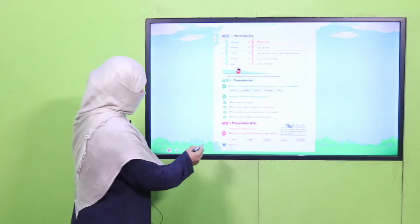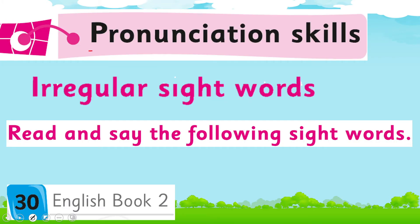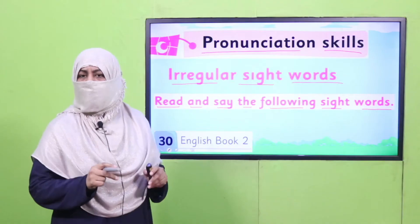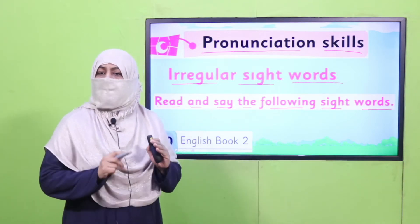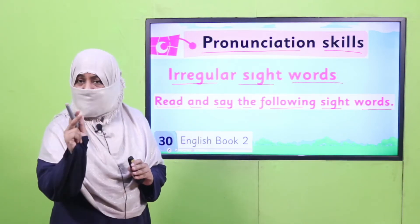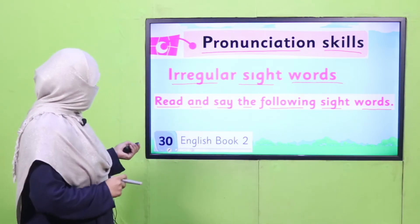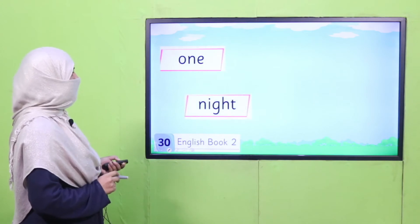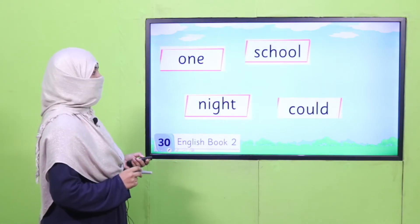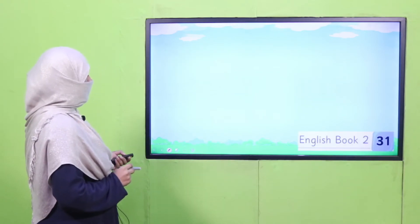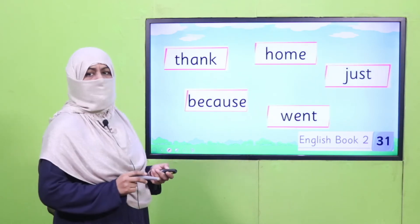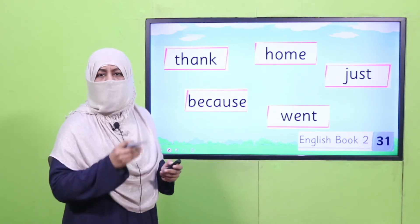Open your book on page number 30. Under the title Pronunciation Skills — Irregular Sight Words — read and say the following sight words. We apply sight reading strategies: see and say. On page 30, the words are: one, night, school, could, through. On page 31, the words are: thank, because, whom, went, just. So these ten words are there for you to practice.